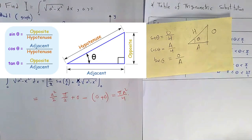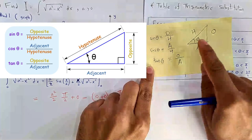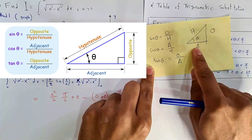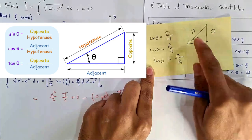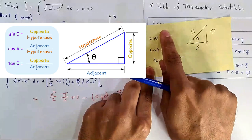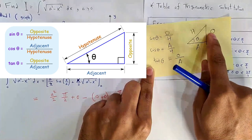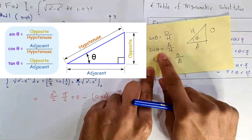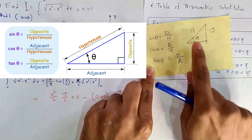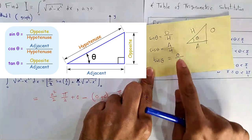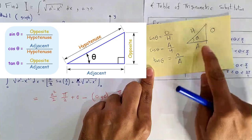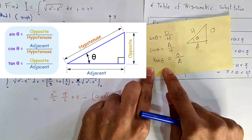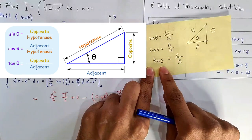A quick review of trig ratios: sin θ = opposite/hypotenuse, cos θ = adjacent/hypotenuse, tan θ = opposite/adjacent. Knowing these three allows you to find cosecant, secant, cotangent, etc.